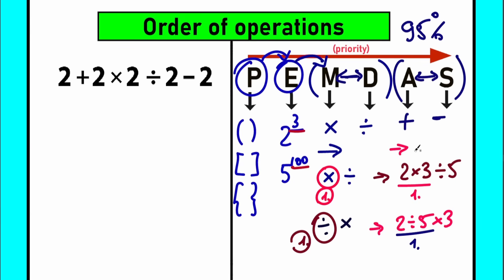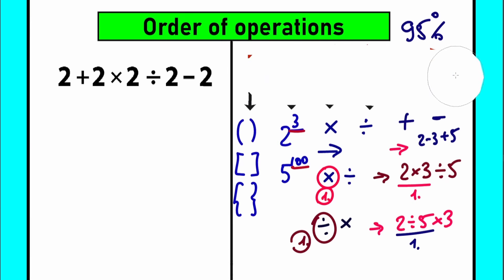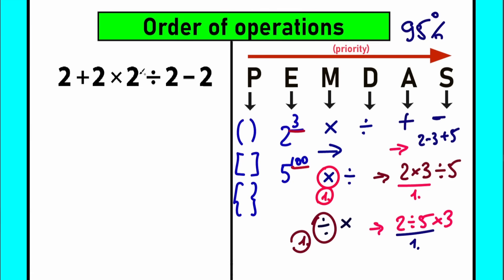A stands for addition, S stands for subtraction — also performed left to right with equal priority. Now let's look closely at our question and solve it. First step is parentheses — let's scan for any brackets. I don't see any, so we skip this step. Next step is exponents — scanning for powers like 2 to the power of 3. I don't see any of those either, so we skip that too. No parentheses, no exponents — great.